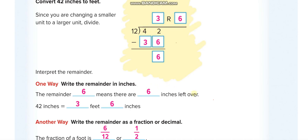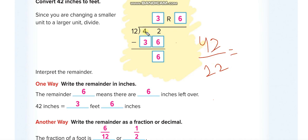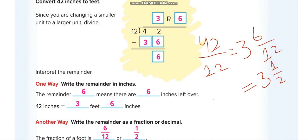We can write this two ways. The first way: three feet and six inches. The second way: as a fraction, 42 over 12 gives three remainder 6 over 12, which simplifies to three and a half feet. Six inches is also half a foot, so both answers are equivalent and correct.